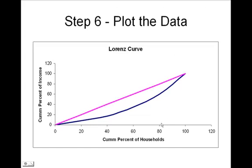Next, plot the data. The blue curve is the Lorentz curve. You can see from this curve that 20 percent of the people in this economy — or in this case, one person — makes 3 percent of the income. Likewise, you can see that 20 percent of the people in this economy make 40 percent of the income.